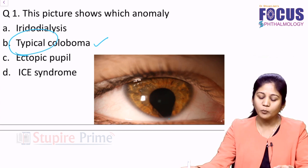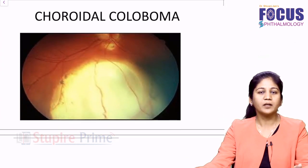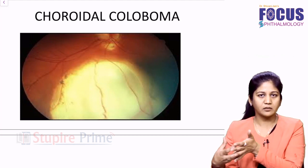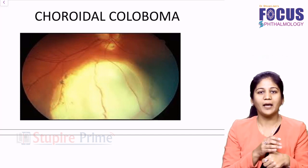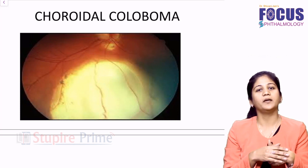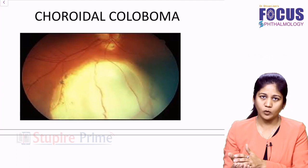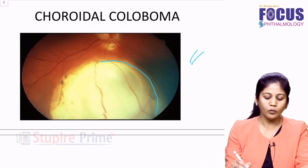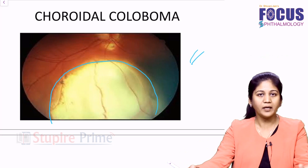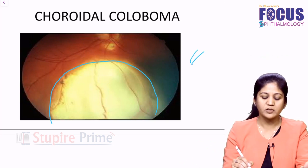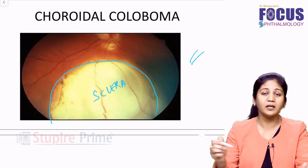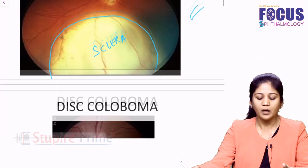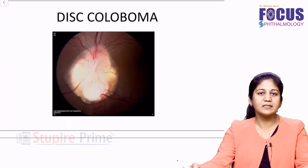Coloboma is not only seen on the iris — the defect can appear in every structure of the eye. You may have a lens coloboma, a zonular coloboma, a choroidal-retinal coloboma, or an optic disc coloboma. When you see a picture showing a defect in the choroidal and retinal region, on indirect ophthalmoscopy you see a white bare area which is now the sclera — the choroid and retina are very thin. This is a picture of choroidal coloboma.